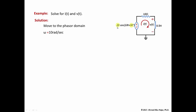Next, we convert the voltage source from the time domain into a phasor value. The cosine voltage is converted to a phasor by taking the magnitude and phase of the sine wave and expressing it as a complex number in polar form. The input voltage Vi equals 20 at an angle of 30 degrees — this is the polar form of a complex number.